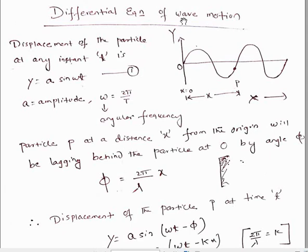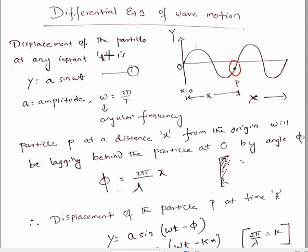The differential equation of wave motion: we know that a wave propagates when particles of the medium vibrate about their mean position and the energy is transferred from one particle to the next. Consider a wave traveling in the positive x-axis direction. If we consider a particle P which is executing simple harmonic motion, then the displacement of the particle at any instant t will be given by y = a sin(ωt), where a is the amplitude.